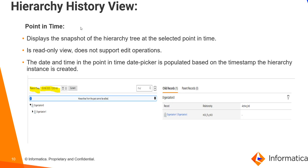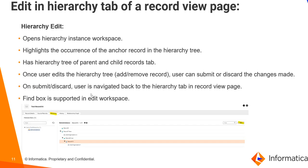Hierarchy history view — Point in Time: It displays a snapshot of the hierarchy tree at the selected point in time. This is a read-only view and does not support edit operations. The date and time in the point-in-time date picker is populated based on the timestamp of the hierarchy instance created. Once you open a record, the hierarchy tab will have an edit option. On click of edit, it will open the hierarchy instance workspace, where the user can edit the hierarchy tree by adding or removing records, and can submit or discard changes. Once submitted or discarded, the user is navigated back to the hierarchy tab in the record view page.